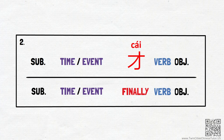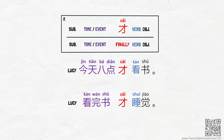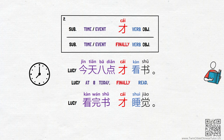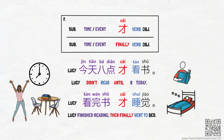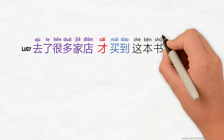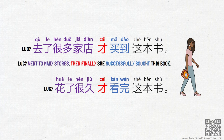For example, if I say Lucy 今天八点才看书 and Lucy 看完书才睡觉, I am saying, 'Lucy didn't read until eight today,' and 'Lucy finished reading, then finally went to bed.' Can you figure out the meaning of Lucy 去了很多家店才买到这本书 and Lucy 花了很久才看完这本书? The meanings are: 'Lucy went to many stores, then finally she successfully bought this book,' and 'Lucy spent a long time, then finally she finished reading this book.'